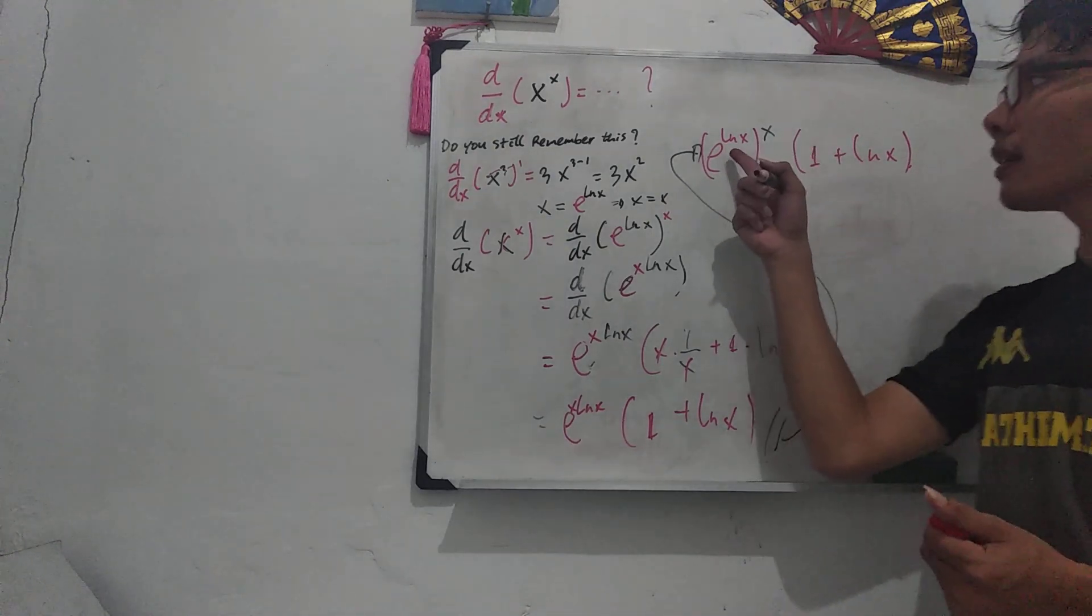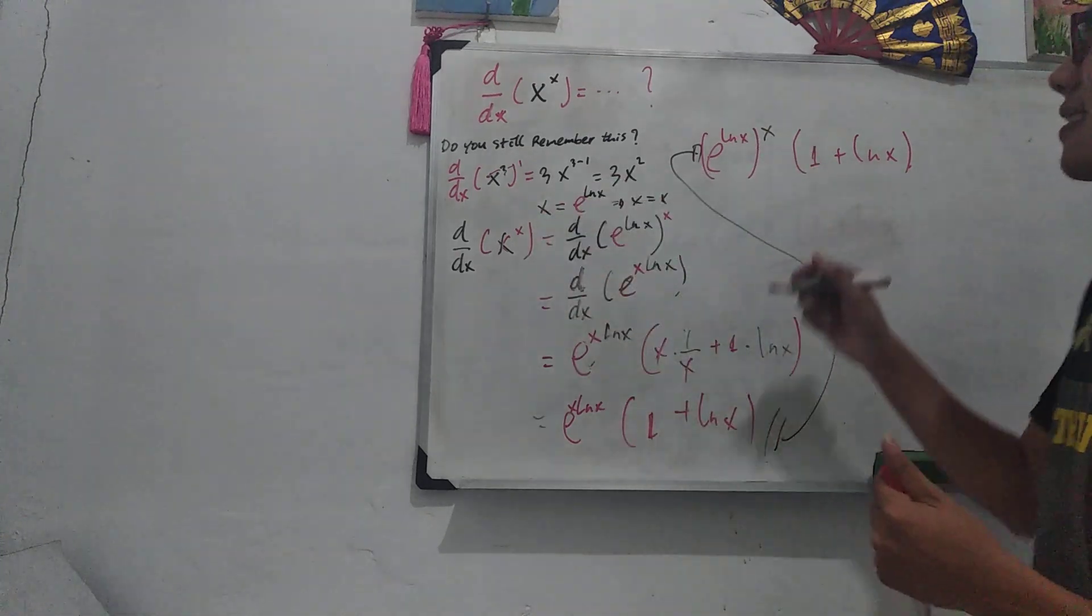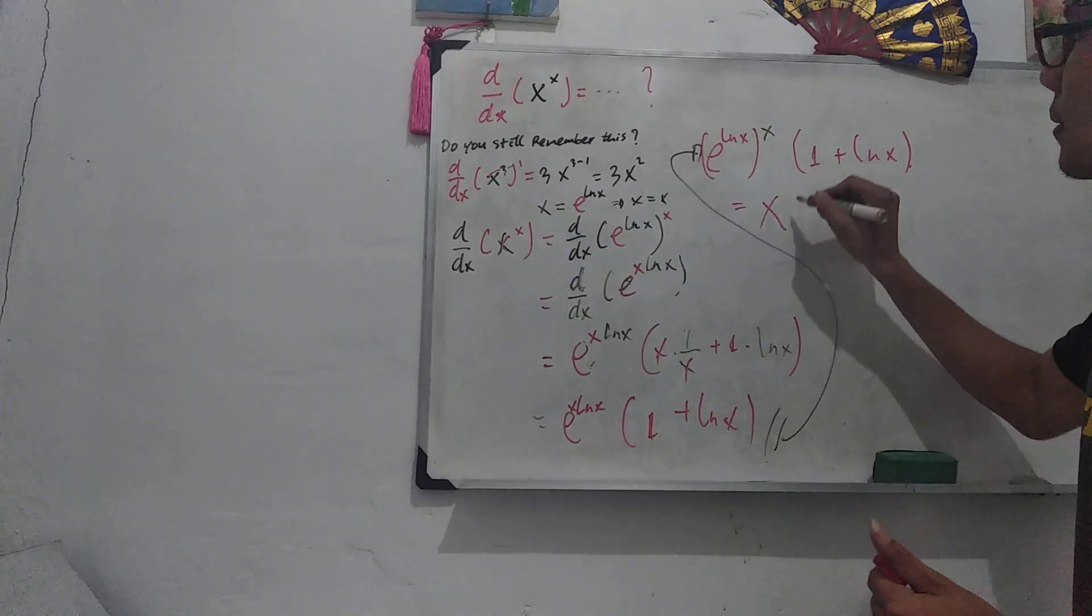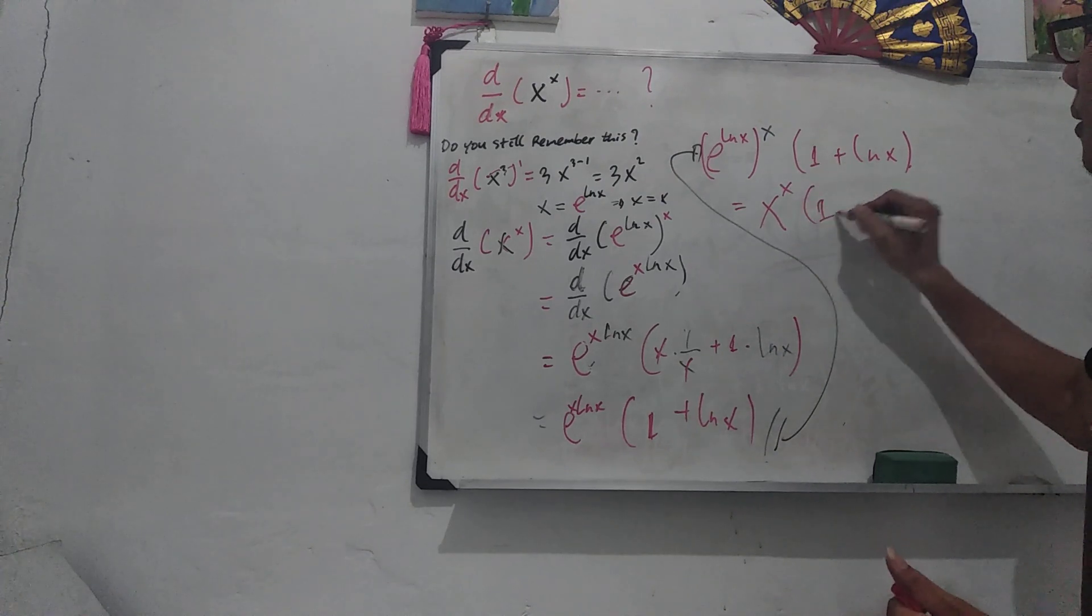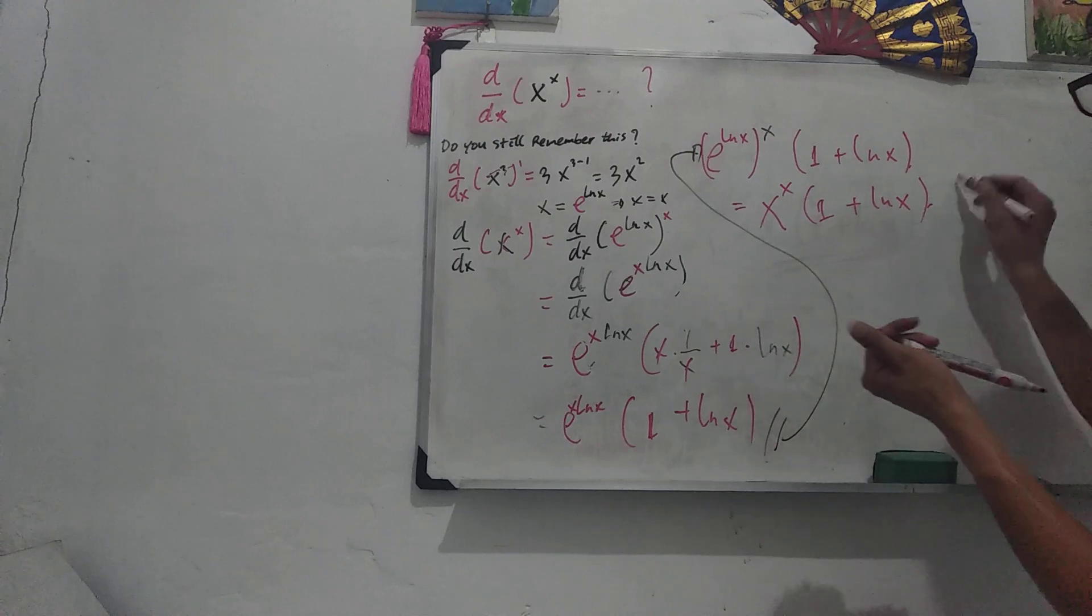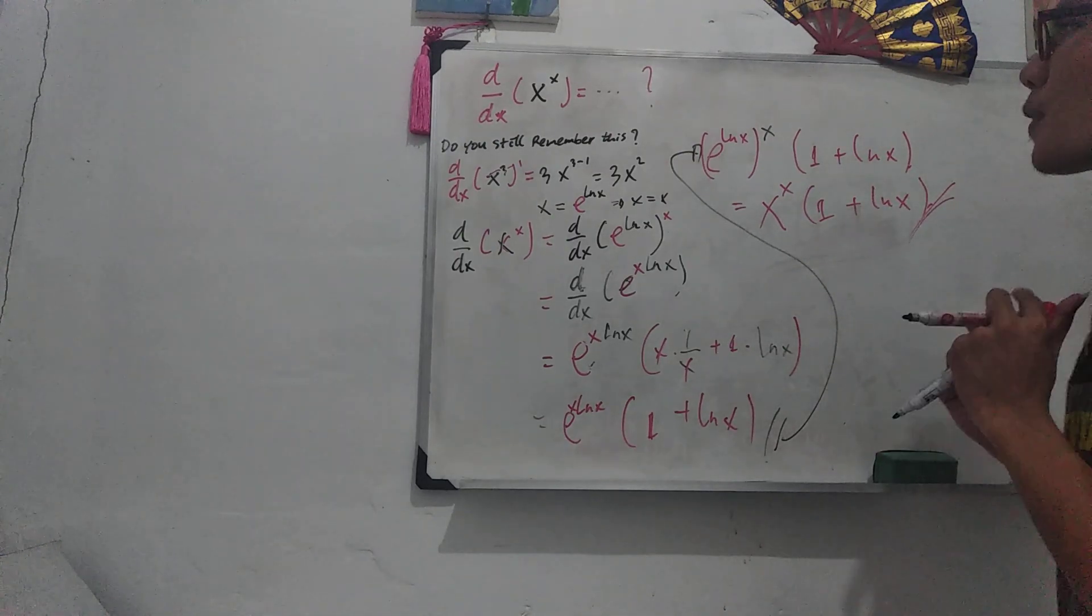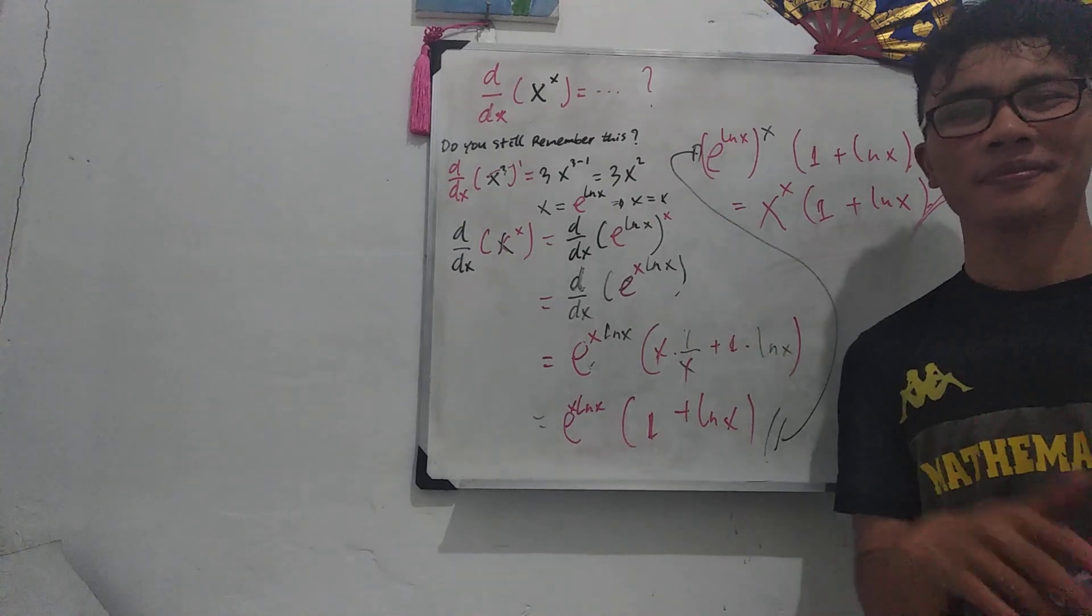So this is my, look at this, e to the power of ln x is equals to x. So this equals to x to the power of x times 1 plus ln x. And this is our last result, and we solved the problem. Thank you.